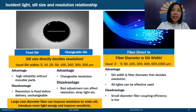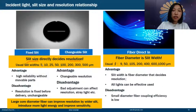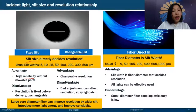Now let's discuss slit size and its relationship to resolution. There are two types: fixed slit and changeable slit. Slit size directly determines resolution. Common slit widths are 5, 10, 25, 50, 100, 200, 300, and 500 micrometers. Fixed slits have no movable parts so reliability is better, but the resolution is fixed at delivery and cannot be changed. Changeable slits allow the customer to adjust resolution for different applications, but improper adjustment can affect resolution and stray light performance.